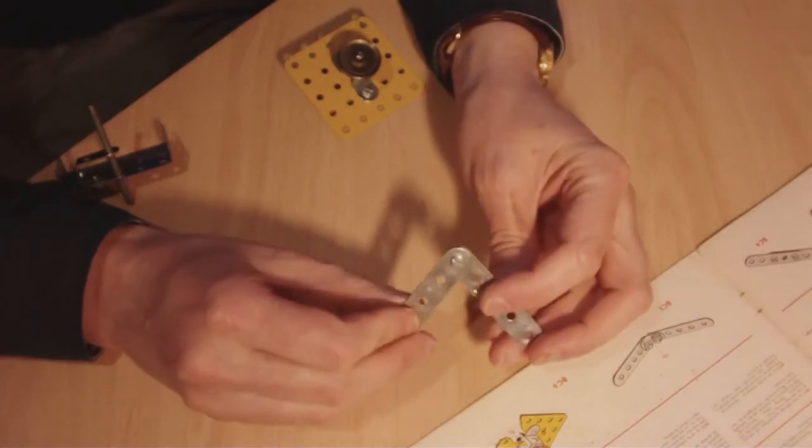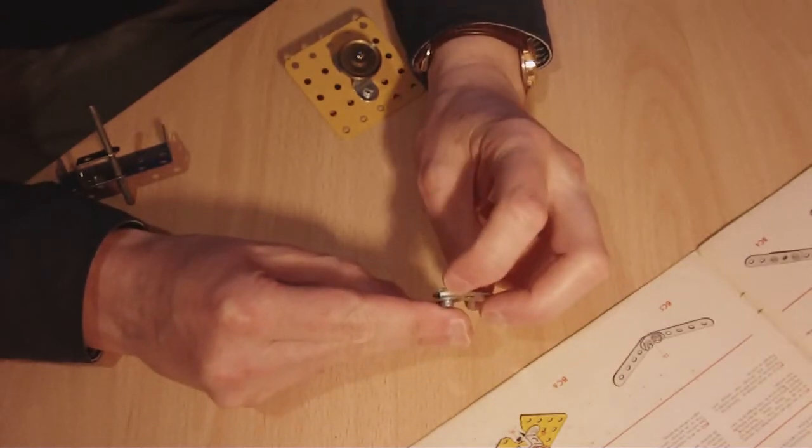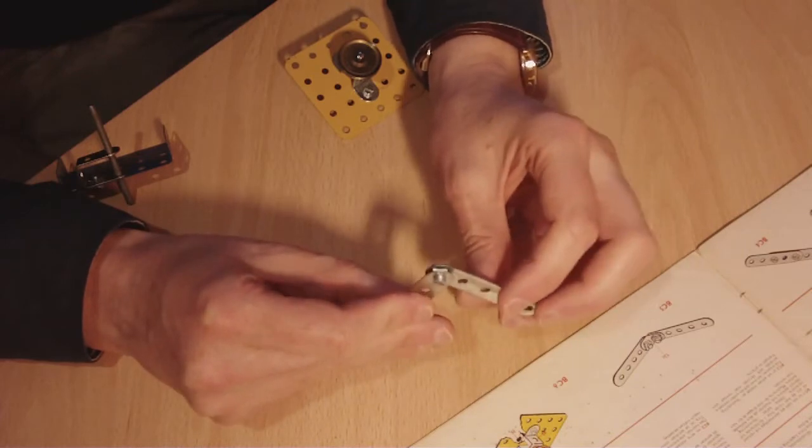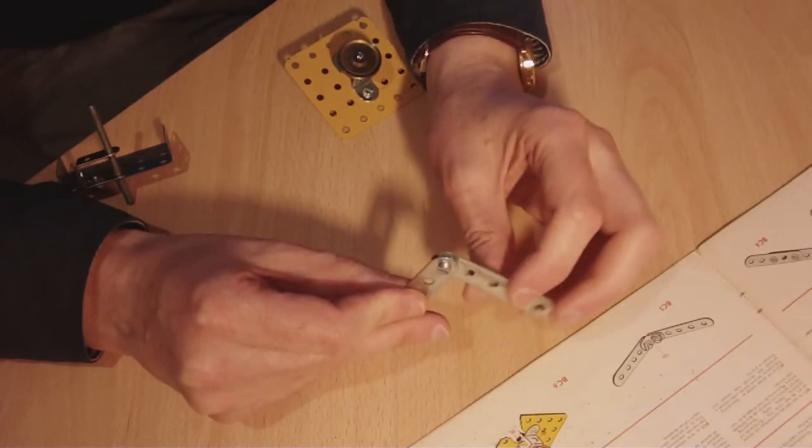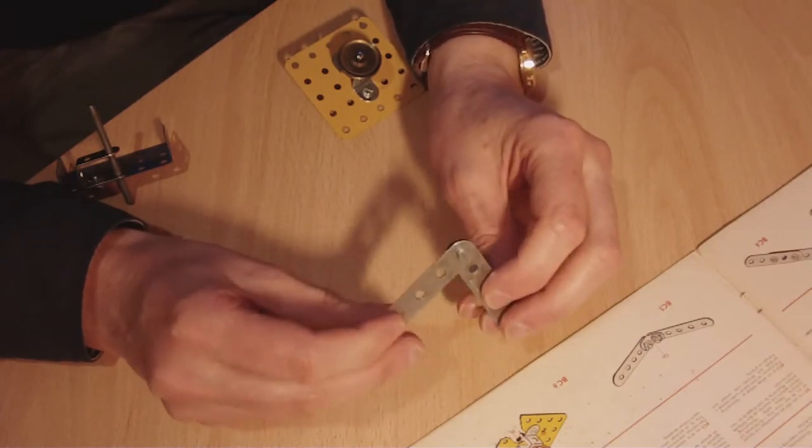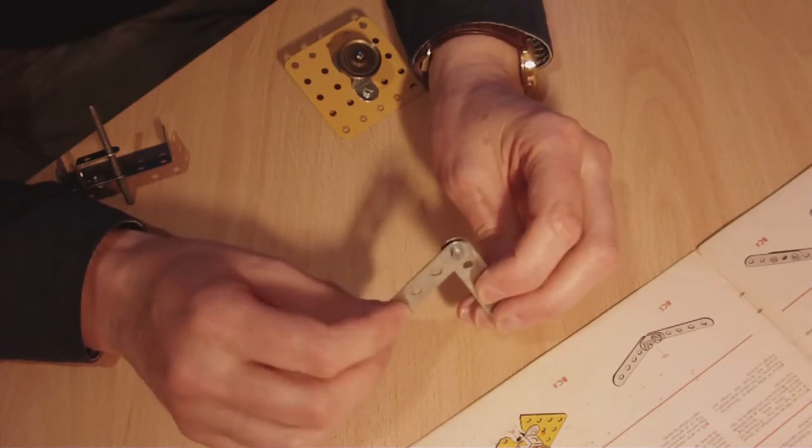BC2 is slightly different. This strip has nuts either side, so it doesn't move in relation to the bolt. This strip does. It's free.